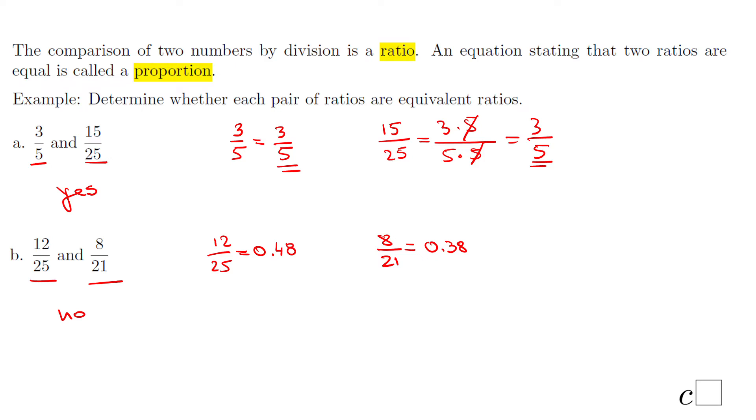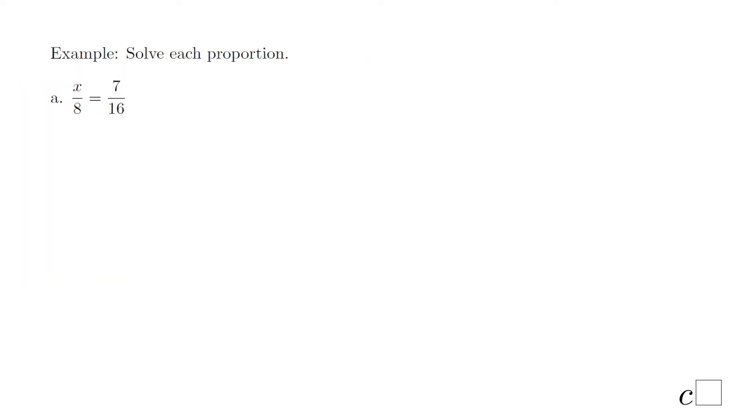Let's move to the second part of this lesson about proportion. We want to solve this proportion, find x, where we have two ratios and the equals between them. In a proportion, the product of the extremes is equal to the product of the means. X times 16 equals 8 times 7. Cross multiply in other words.